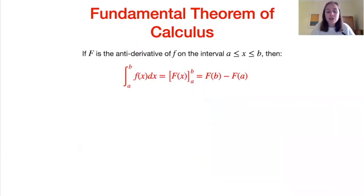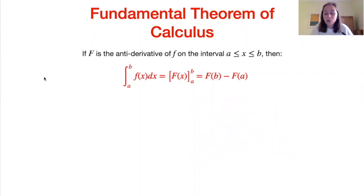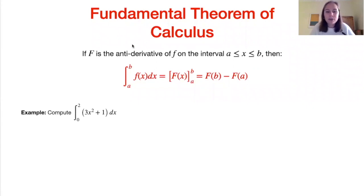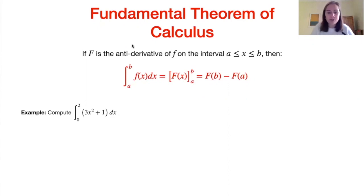Moving on then to the fundamental theorem of calculus. Remembering that we denote capital F as an antiderivative, we say that the integral from a to b of f of x dx is equal to the antiderivative evaluated between a and b, which equals the value of the antiderivative at b minus the value of the antiderivative at a. Let's see this in practice with an example: we have a definite integral between integration boundaries zero and two, and we want to find the integral of 3x squared plus 1.